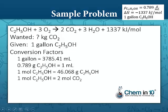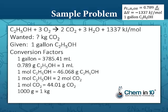Once we convert to moles of carbon dioxide, we need the molar mass of carbon dioxide — one mole of carbon dioxide has a molar mass of 44.01 grams per mole. And finally, once we have grams of carbon dioxide, we convert to kilograms: 1,000 grams equals one kilogram.